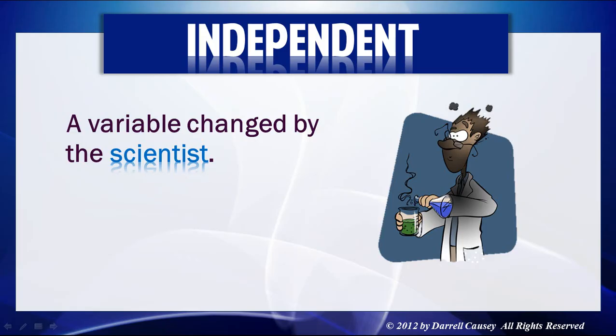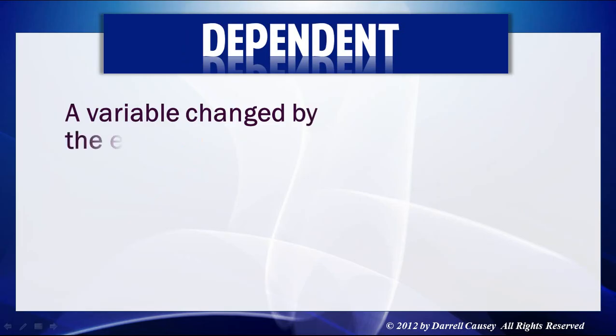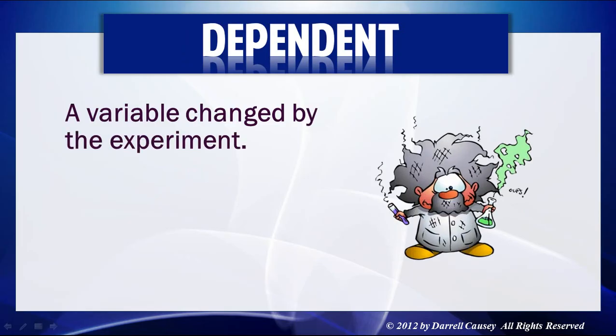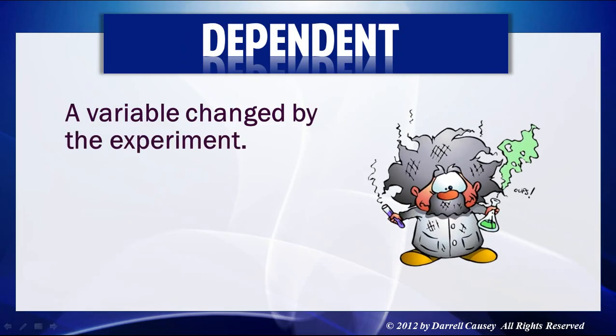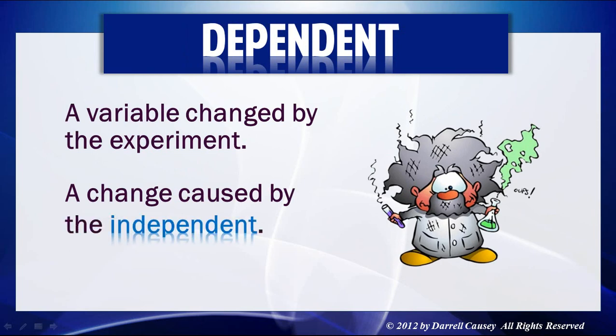Then there's the dependent variable — that's a variable changed by the experiment. It's something that happens because of the independent variable, and this is usually the data that you collect and record in tables and charts so that you can analyze it.